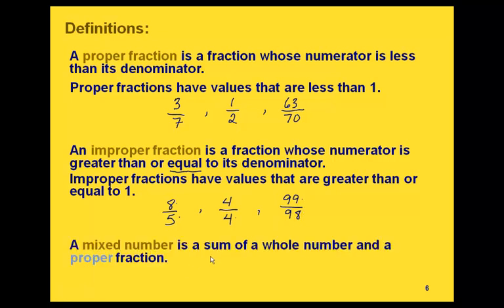And last of all, we have mixed numbers. These are a combination of a whole number and a proper fraction. Examples include 1 and 2 thirds — where 1 is the whole number and 2 thirds is the fraction — and 5 and 1 fourth, where 5 is the whole number and 1 fourth is the fraction.